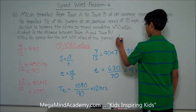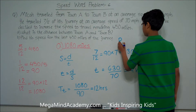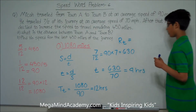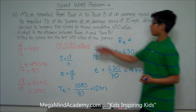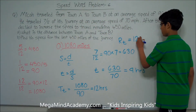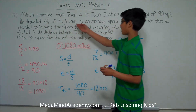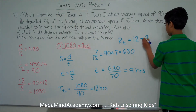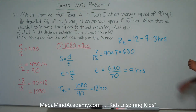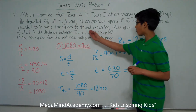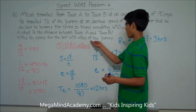So this means that the remaining time RT is equal to 12 hours — because it takes Micah 12 hours to travel from town A to town B — minus the 9 hours that Micah has already taken to travel 7/12ths of his journey. So 12 minus 9 is equal to 3 hours. This means that it takes Micah 3 hours to travel the remaining 450 miles. Now we need to find his speed for the last 450 miles of the journey.